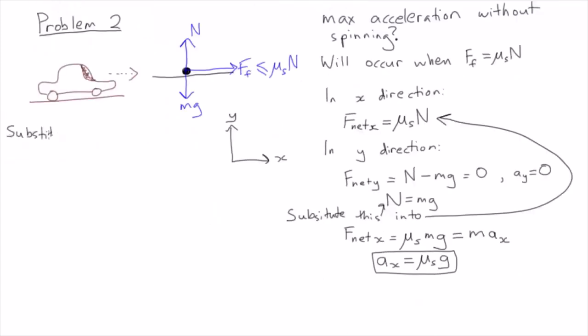So we're all good to now go ahead and start substituting numbers into the answer. For a standard car on a road, μs is around 0.9, which gives us an acceleration of 8.8 metres per second squared. This means that every second, we can increase the speed of the car by 8.8 metres per second.